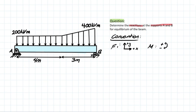We have our conventions here. We have a pin support and we have a roller support. The first thing that jumps out in this problem is the two distributed loads — we have a triangular shape right here, and we have the rectangular shape down here.